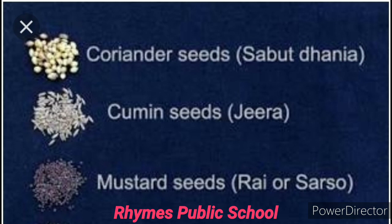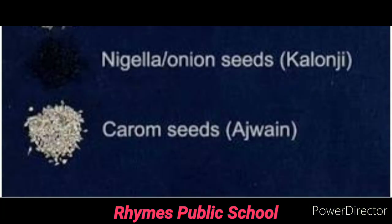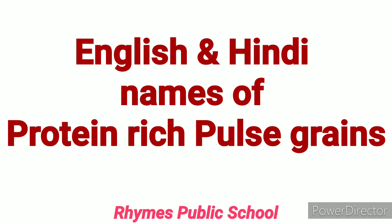Sarson ko kaha jata hai mustard — mustard seeds, which we add in the vegetables. Saunf ko kaha jata hai anise seeds or fennel seeds. Shah jeera is called caraway seeds. Next is kalonji, which is called onion seeds or nigella. Or ajwain ko kaha jata hai carom seeds.